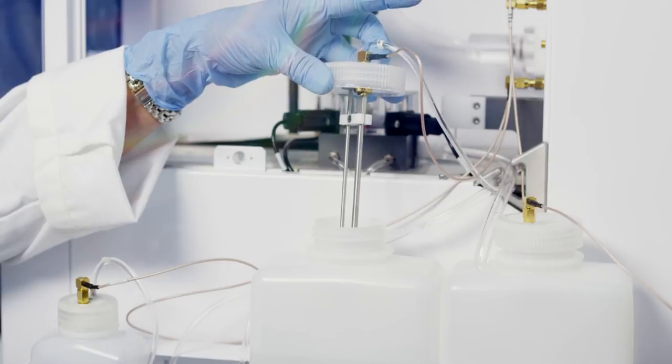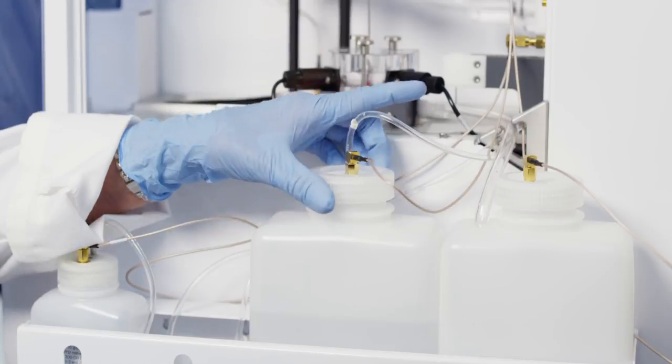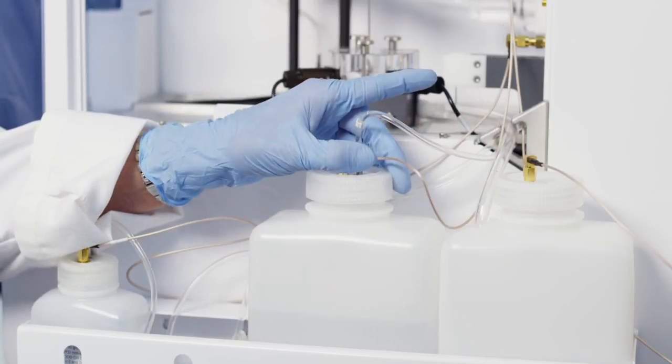When all of the buffer powder has dissolved, pour the buffer into the buffer bottle and place the bottle into the instrument. Screw on the lid, and you're ready to prime your buffer line.